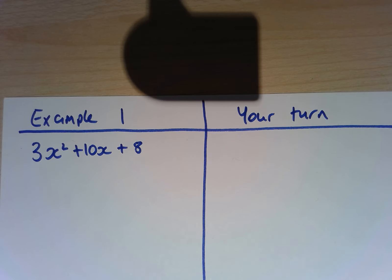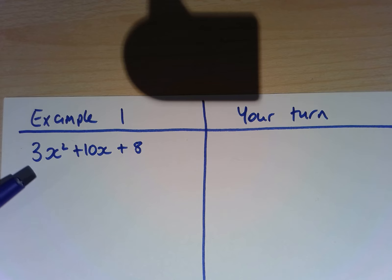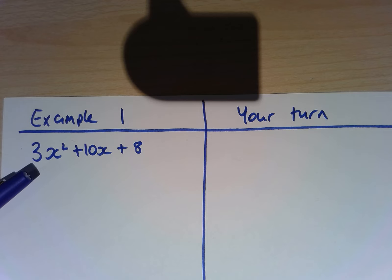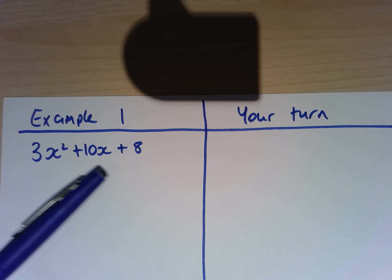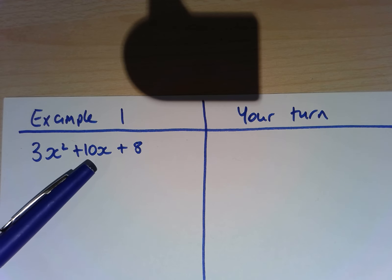In this video I'm going to show you how you can factorise an expression where the coefficient of x squared isn't 1. So for example here the coefficient of x squared is 3. In order to do this, we need to partition the expression into two parts.